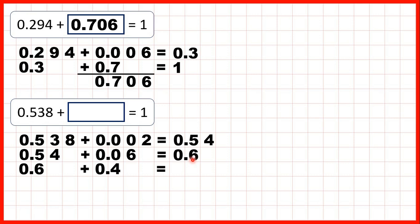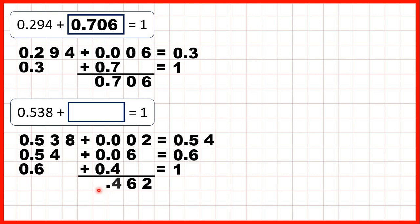But now from 0.6, we can just add 0.4 — so four tenths — and that gives us 1.0, or one whole. So we added 0.002, then six hundredths, then four tenths. All together we added 0.462.